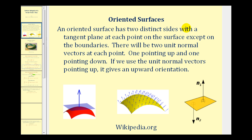An oriented surface has two distinct sides with a possible tangent plane at each point on the surface except on the boundaries.